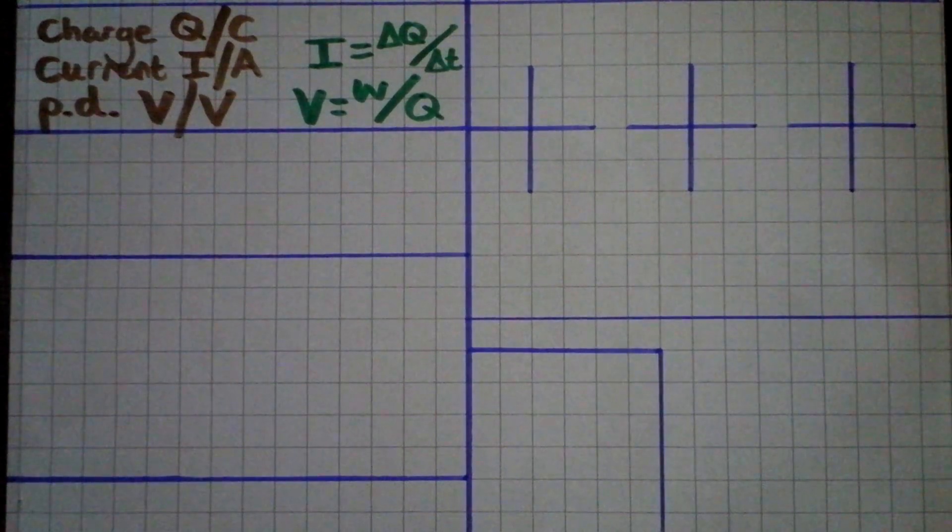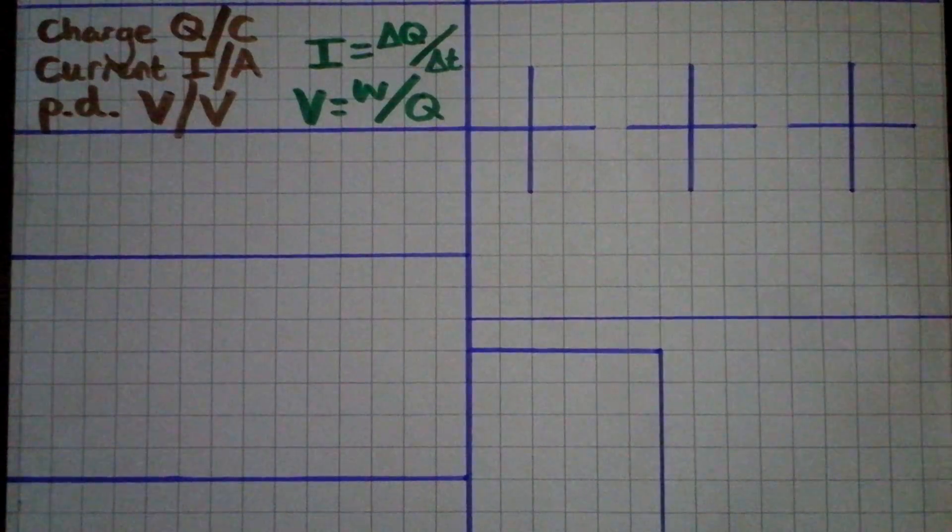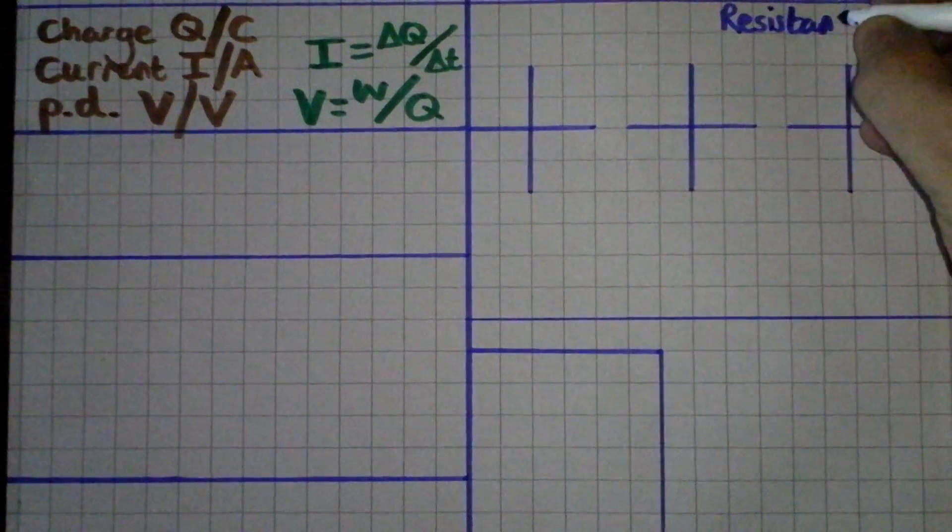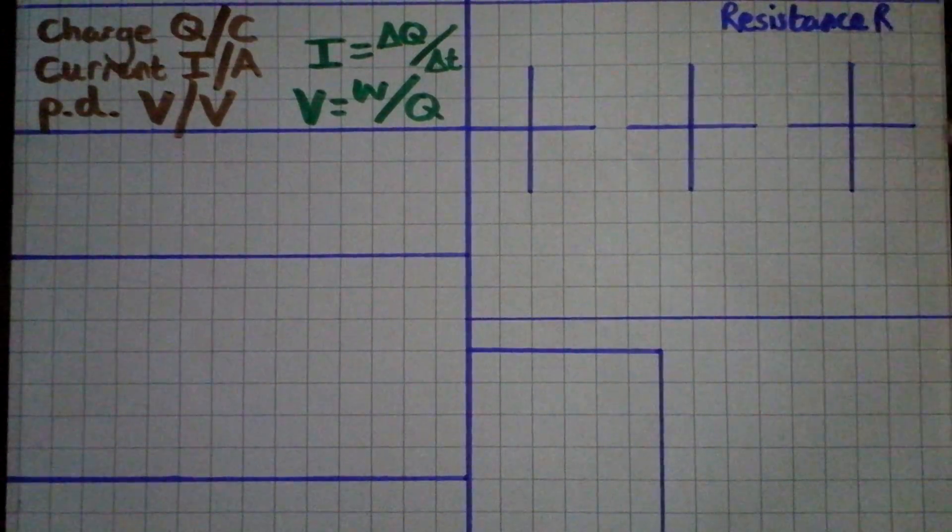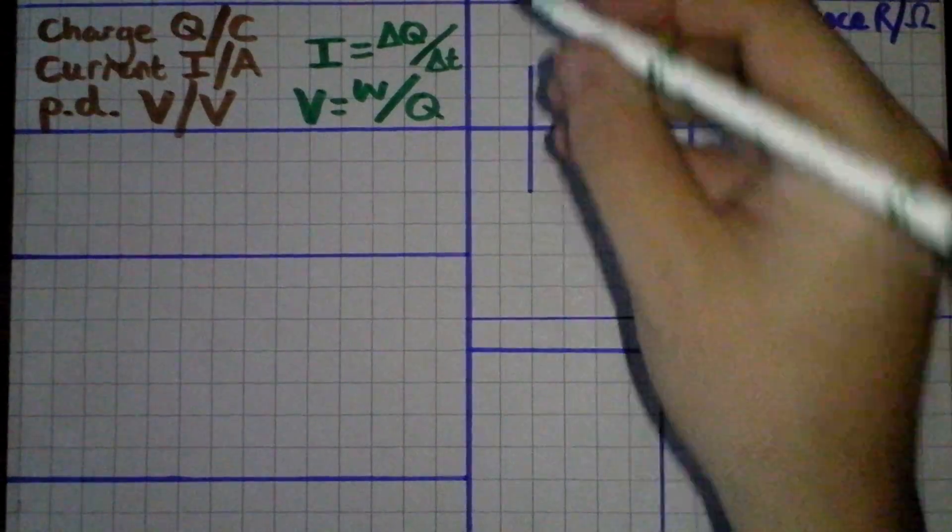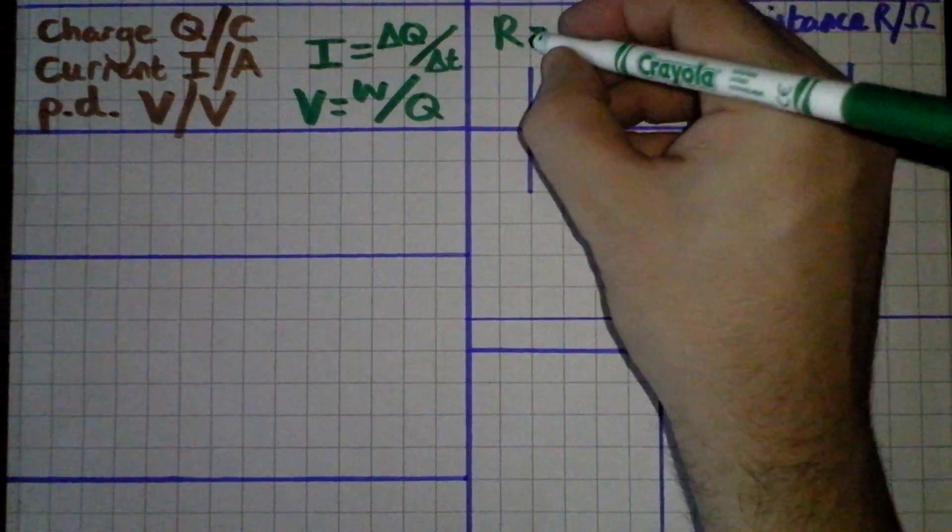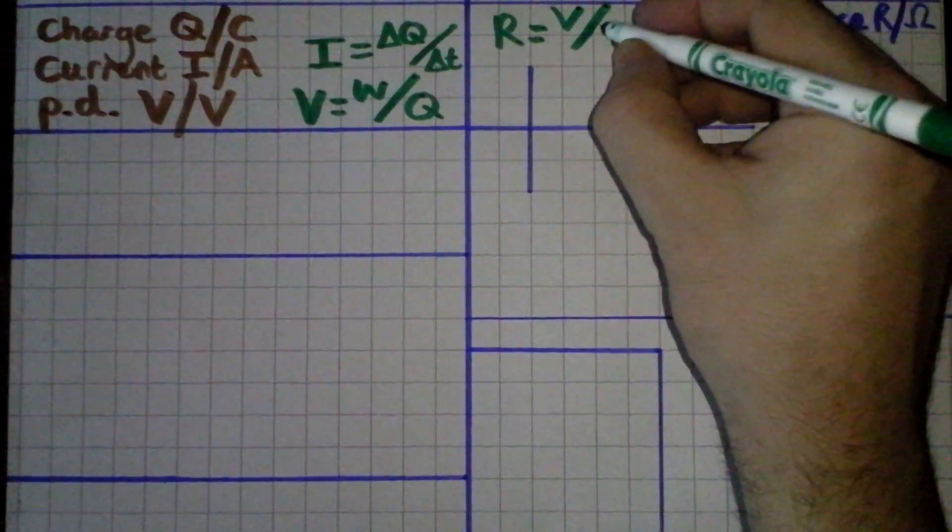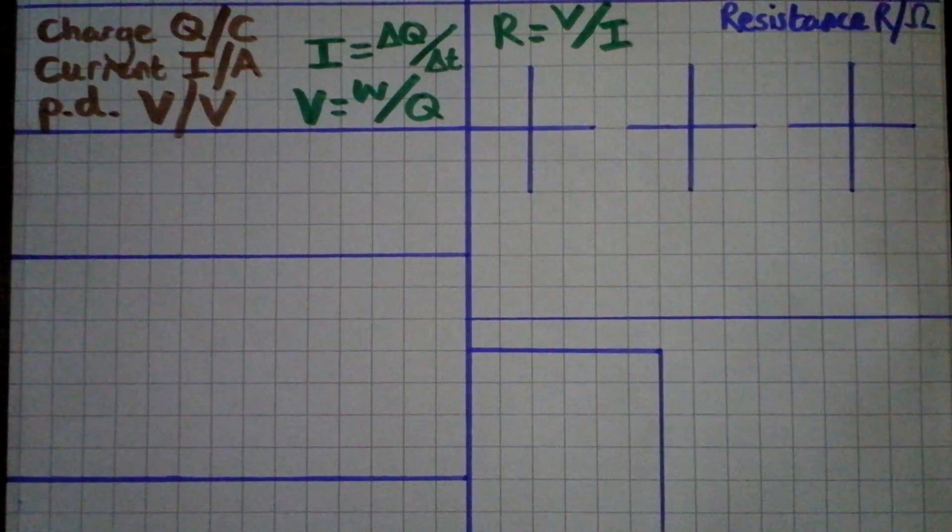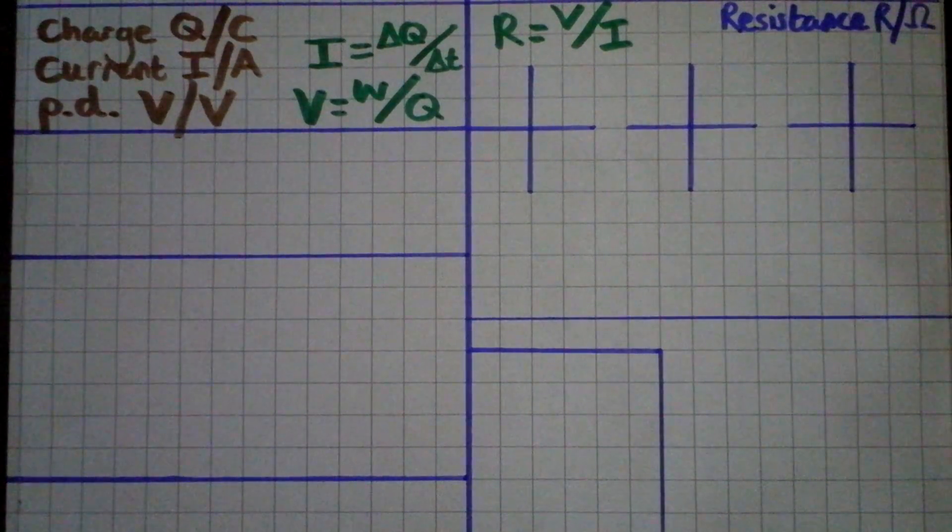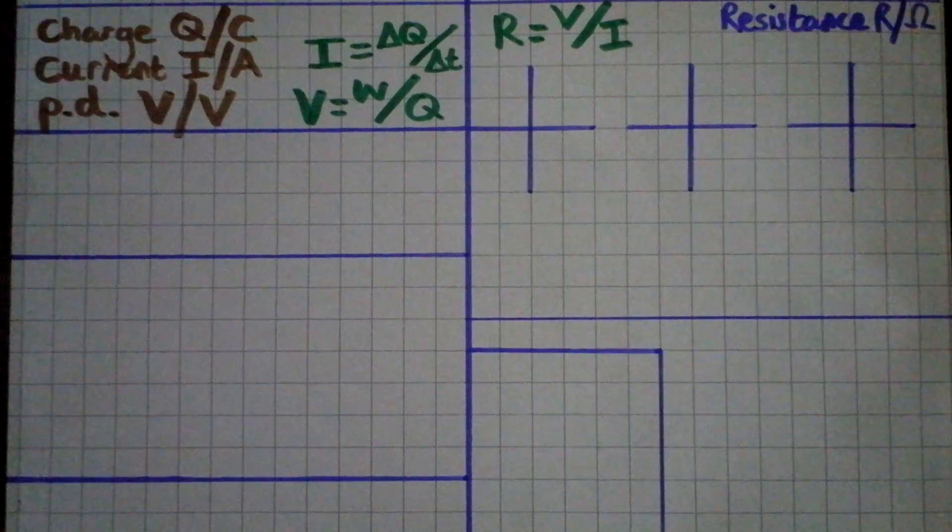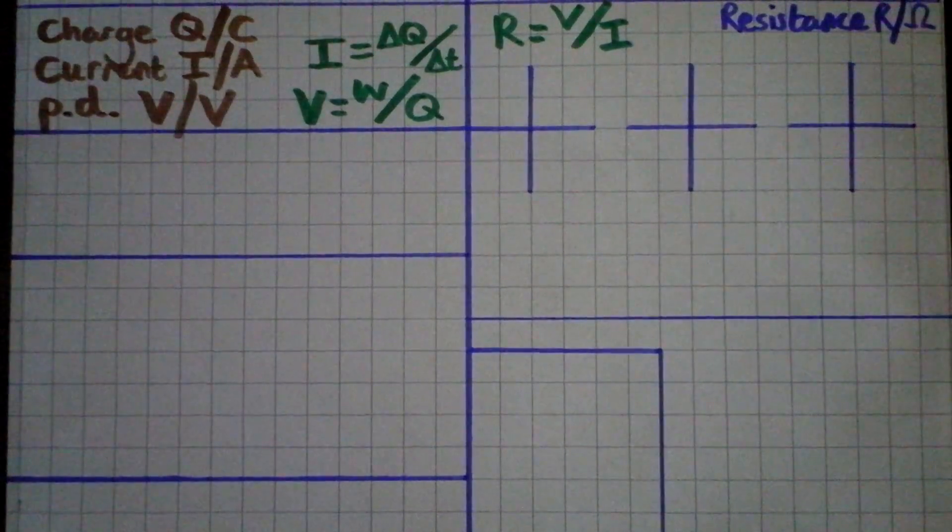Those two things, potential difference and current, come together when we look at resistance. Resistance is the opposition to a flow of electrical current. It has symbol R and the unit of ohms. Resistance is defined from Ohm's law. Ohm's law is a really important equation and it says that R is equal to V over I. That is to say that V and I are in direct proportion, V equals I R, and their constant of proportionality is the resistance. You'll see from that equation that if you increase the potential difference you get a bigger current, if you decrease the resistance you get a bigger current.